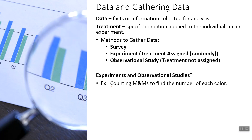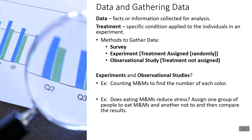So what do these fall under? Example one: counting M&Ms to find the number of each color. We're not assigning any sort of treatment, and we're not really asking people questions. Since we did not randomly assign treatments and did not just ask questions, that would be an observational study.